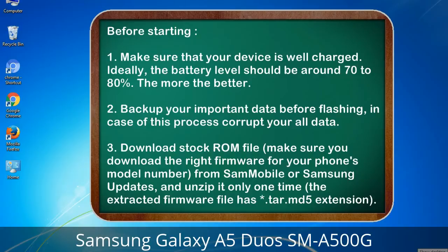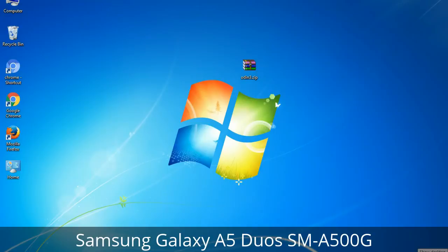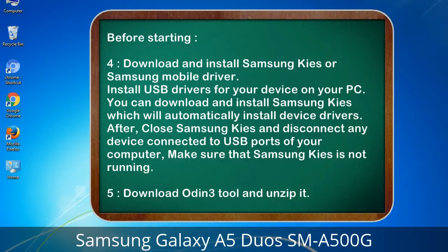Download from Sammobile or Samsung Updates, and unzip it only one time. The extracted firmware file has a *.tar.md5 extension. 4. Download and install Samsung KIES or Samsung mobile driver to install USB drivers for your device on your PC. You can download Samsung KIES which will automatically install device drivers. After, close Samsung KIES and disconnect any device connected to USB ports — make sure Samsung KIES is not running. 5. Download the Odin3 tool and unzip it.